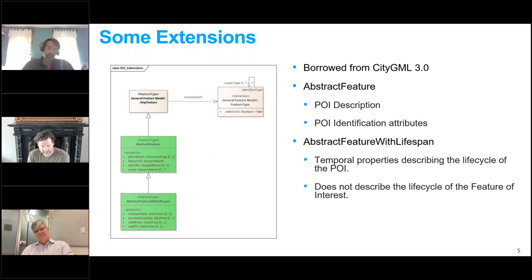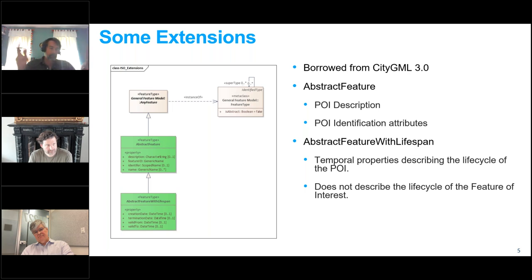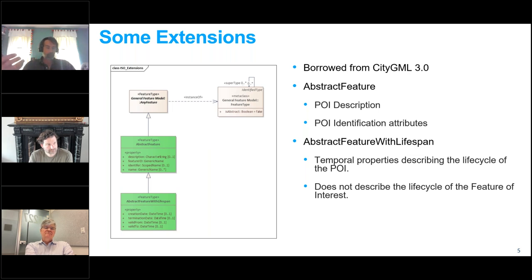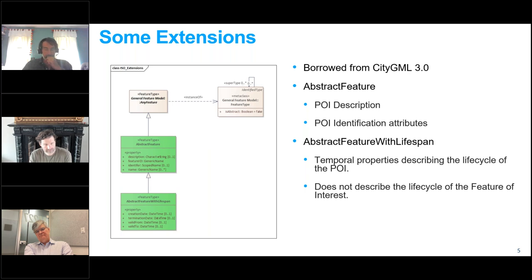We also borrowed extensions from CityGML 3.0. The abstract feature class adds things like a description, identifier, feature ID, and name — basically what-am-I type stuff. Then we added abstract feature with lifespan, which adds when-am-I information: when was I created, when am I supposed to go away, valid from and valid to. Since it's already defined in CityGML 3.0, reuse improves interoperability.